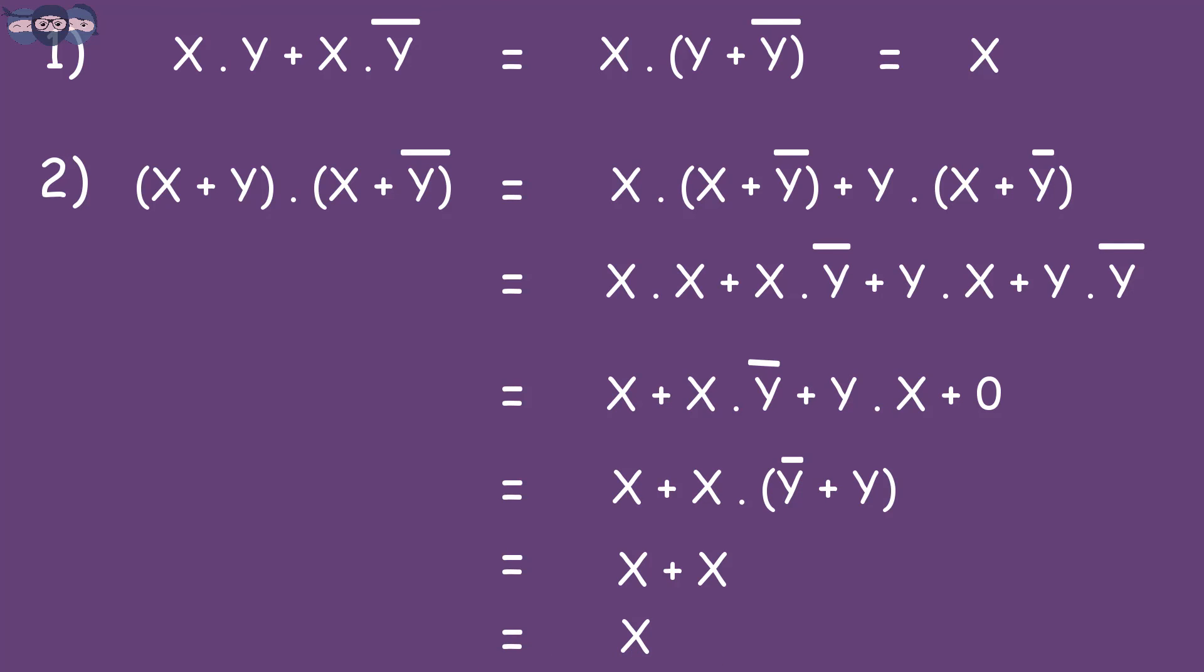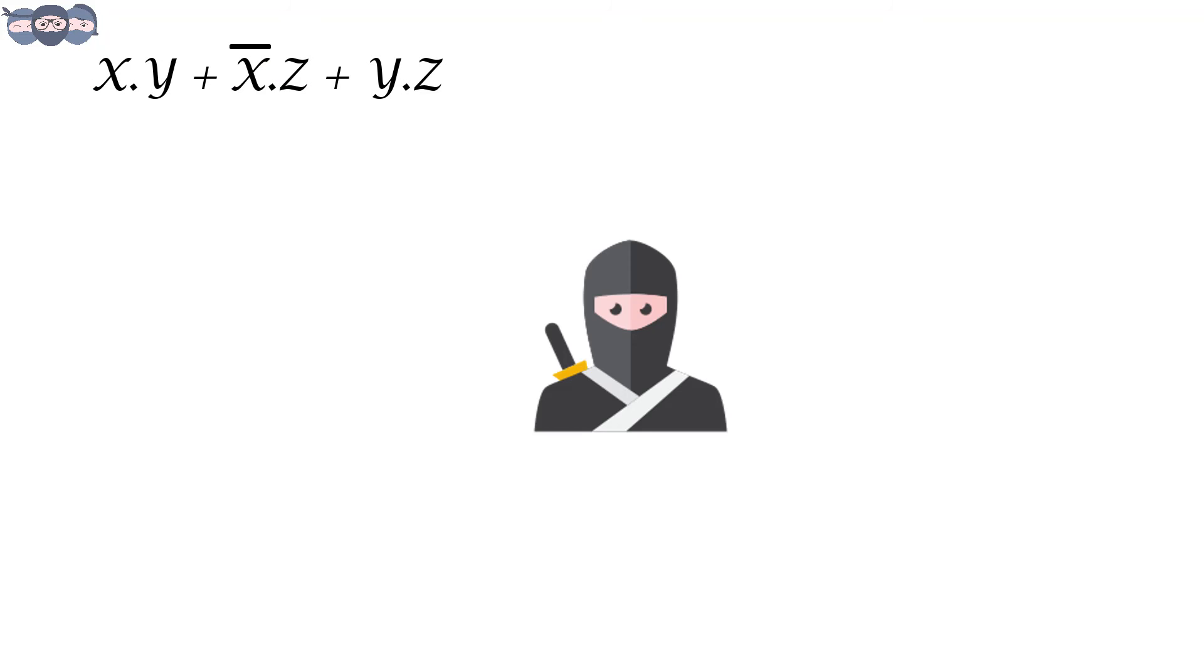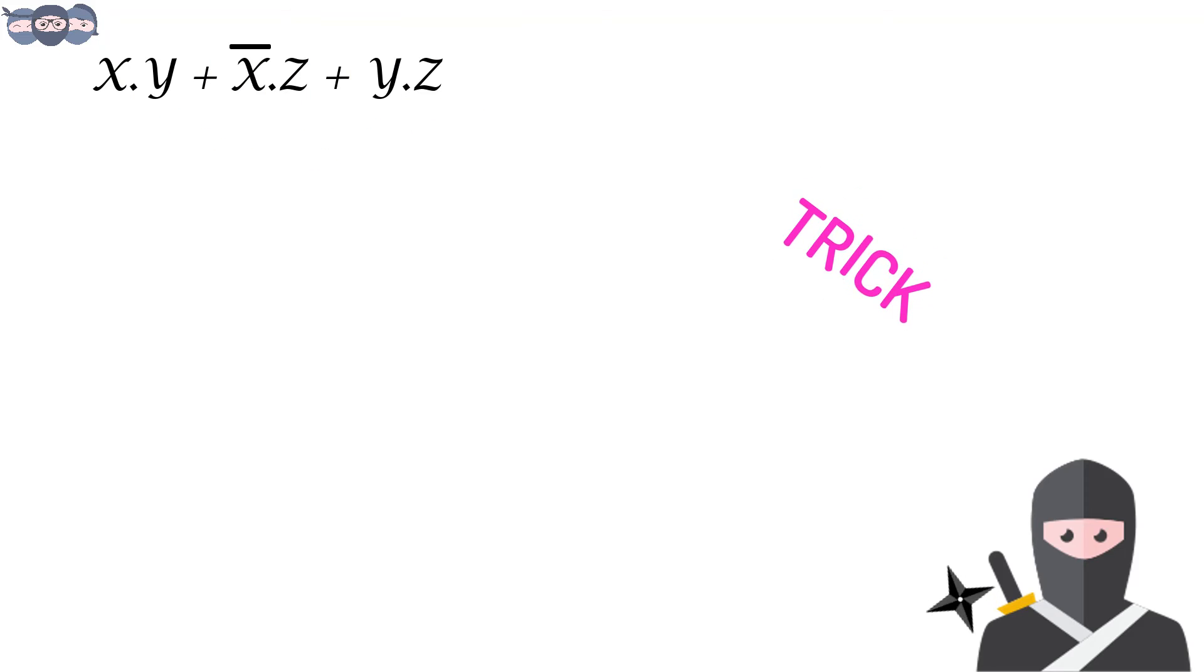Let's see an interesting logical expression. When I am trying to solve this function, I can't find a way to simplify it. This term contains a literal X and the next term contains a literal X bar, that is its complement. The last term is a combination of the other two literals, Y and Z. There is a trick to solve such expressions. Eliminate the last term from the given expression.